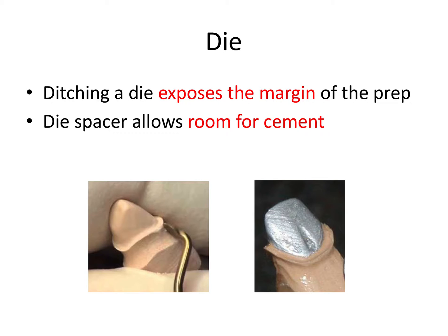So let's set the scene. We took a final impression of the crown prep, poured it in dental stone, and then we have a master cast which is a replica of the whole dental arch or maybe just the quadrant we're working on. Then we make what's called a die for the tooth receiving the crown. The die refers to this positive reproduction of the prepared tooth. Ditching a die exposes the margin of the prep, basically involving scraping and cleaning away any stone below the margin so that it's clearly visible 360 degrees around the prepared tooth. We remove any excess stone that could be obfuscating that margin.